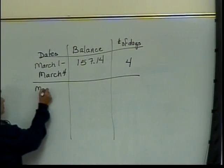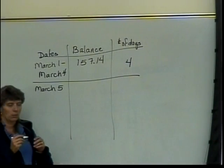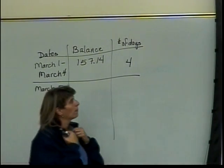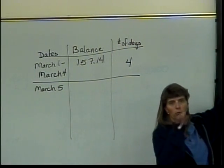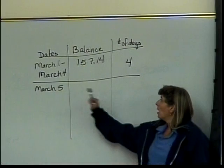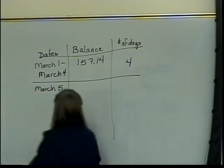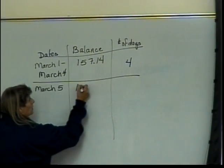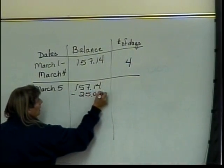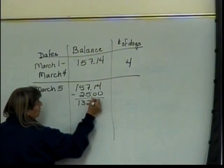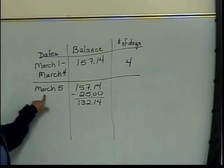Starting on March 5, her balance went down. The previous balance is what you start the new billing period with. On March 5, the balance went down by $25. So to calculate that, I'll take my $157.14, subtract $25, and end up with $132.14. That's my new balance — that's the balance for the 5th.